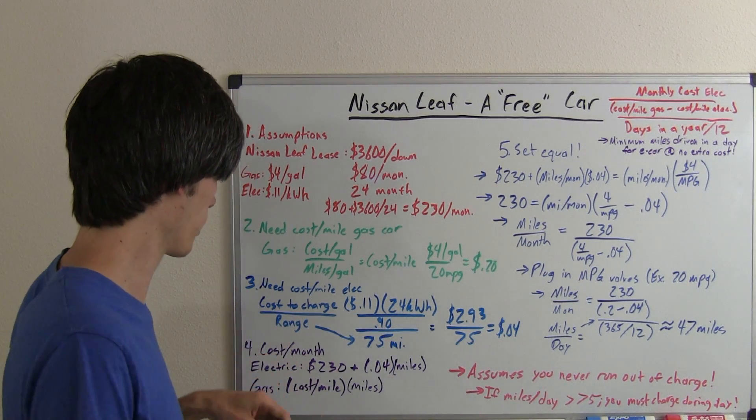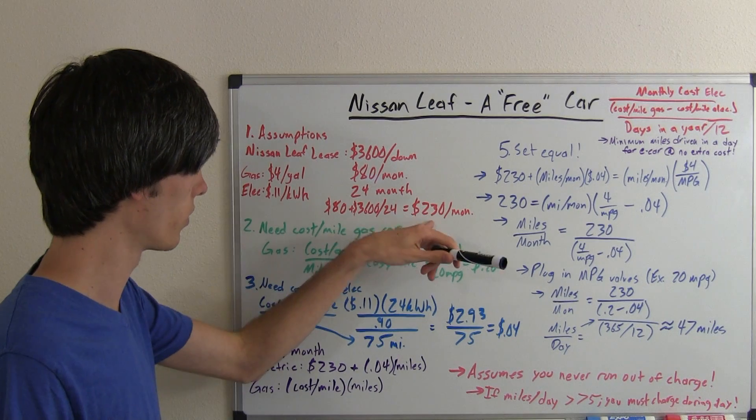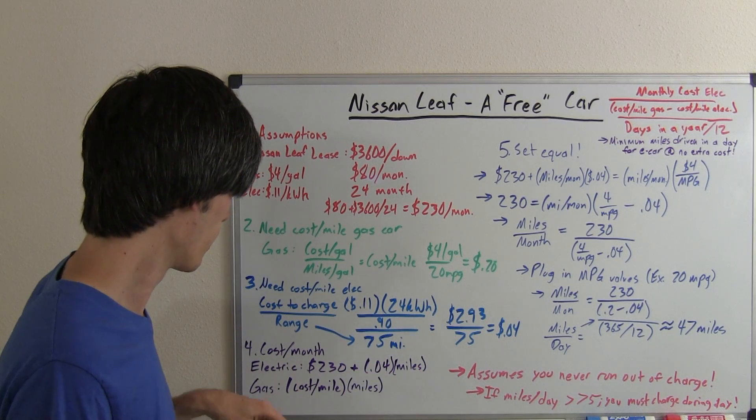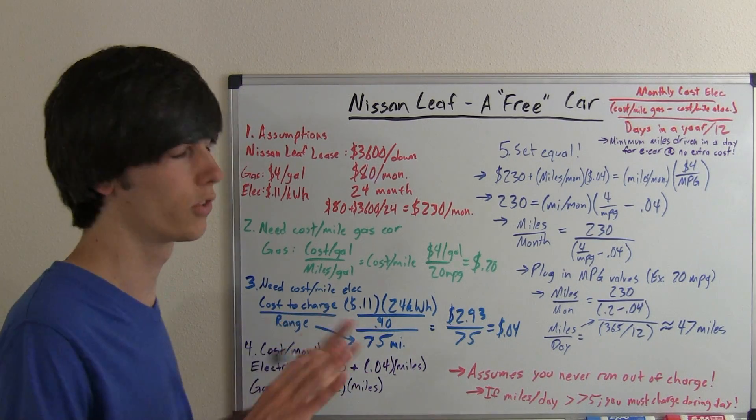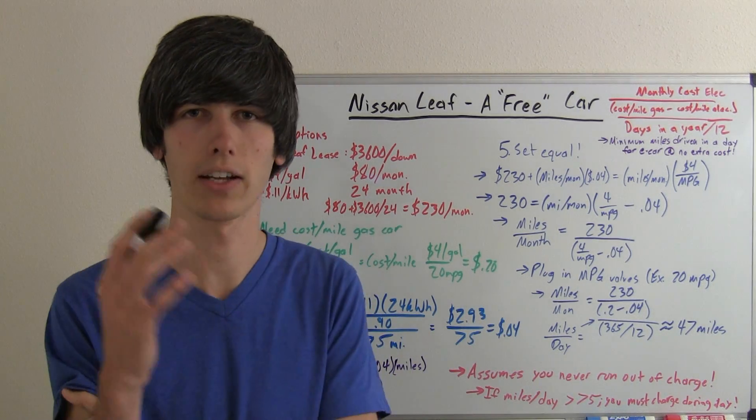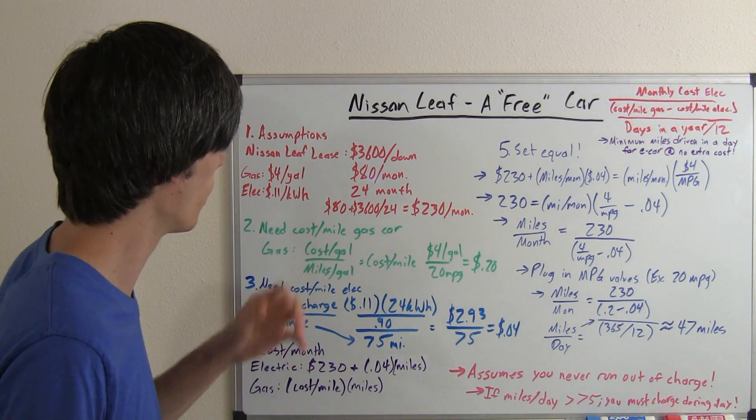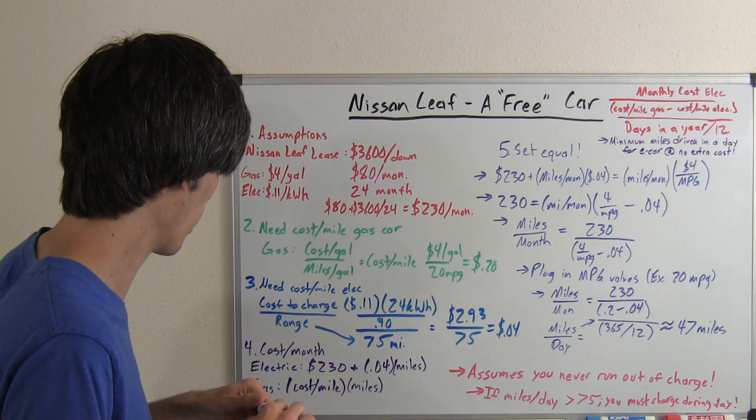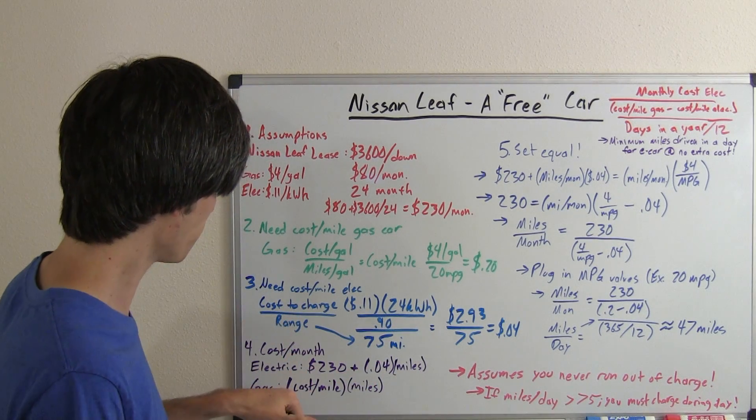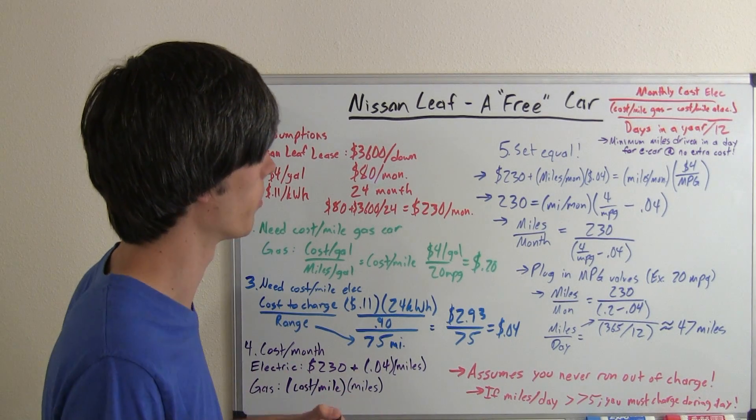Here's where we get to the fun part. Cost per month. The electric cost per month is going to be $230, that's your lease, plus 4 cents for every mile you drive in that month. Your gas cost is going to be, assuming that you have no payment, that's how we get this vehicle to be free, is the fact that you're only paying for gas. That's the only difference. You're not paying for your car payment, because if we included a car payment, an electric car would come out way ahead, and that's not really what we're trying to figure out. We're trying to figure out how you can get a car for no additional cost. Cost per mile times the number of miles you drive in a month will give you your cost per month.